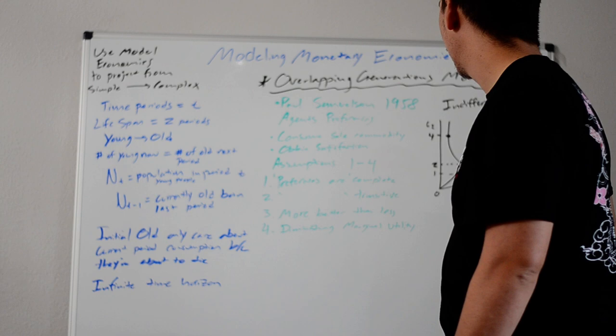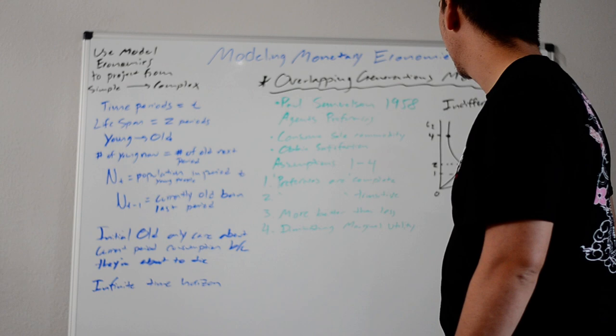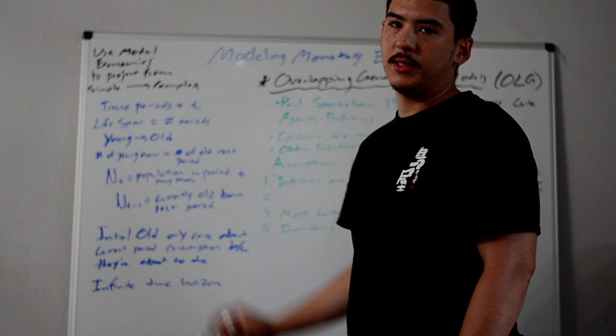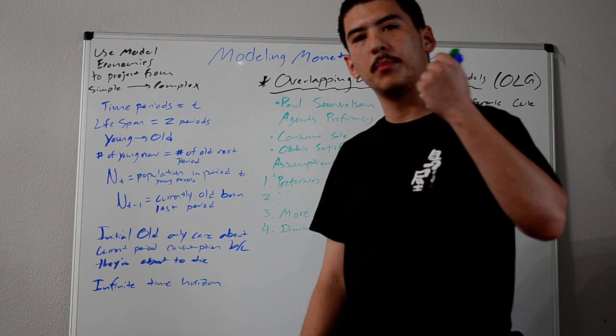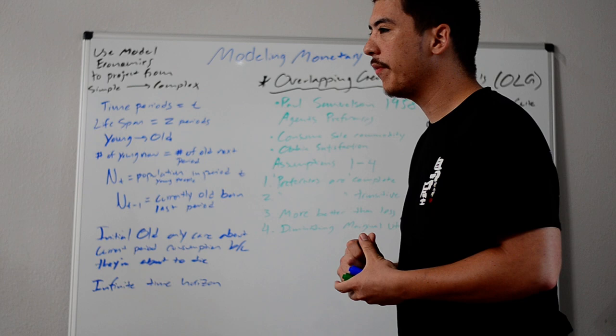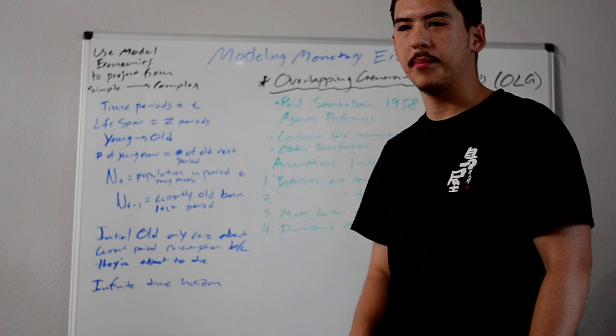I guess we can start with agent's preferences. In the overlapping generations models, you're only alive for two time periods. The time periods are denoted by subscripts t. So, t is this time period, t minus one is the previous time period, t plus one is the future time period. Every agent in this economy only has two periods. You're young, and then you're old, and that's it.